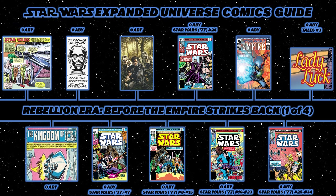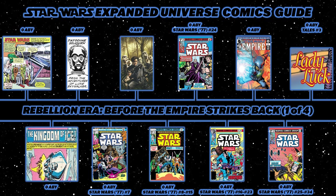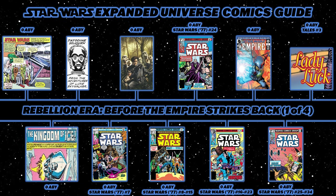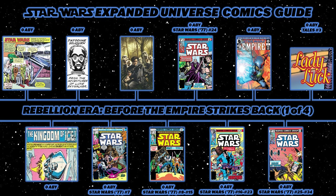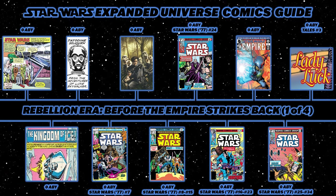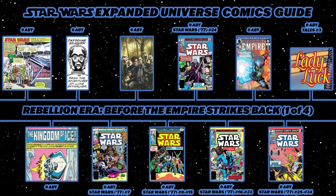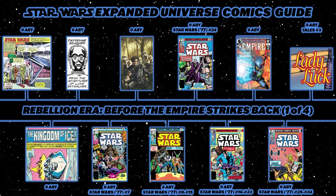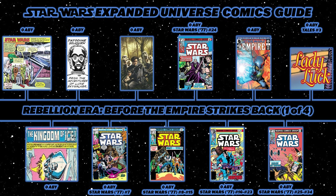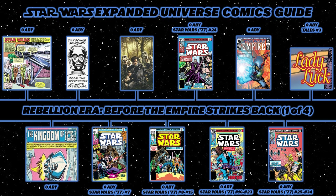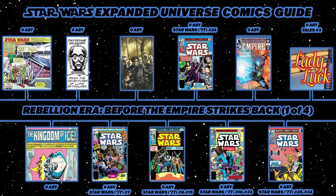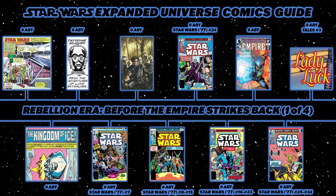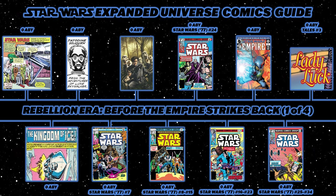Then back into Star Wars 1977 with issue 7, New Planets New Perils. Then back to Empire with To The Last Man, collected in issues 16 through 18. Then back to Marvel 1977 issues 8 through 15. After issue 15, jump ahead to issue 24, Silent Drifting, then go back to issue 16 — which introduces bounty hunter Beilert Valance — and read issues 16 through 23.